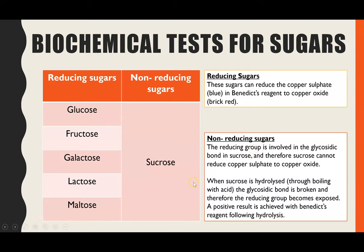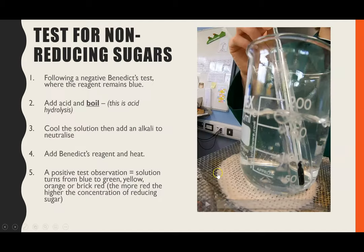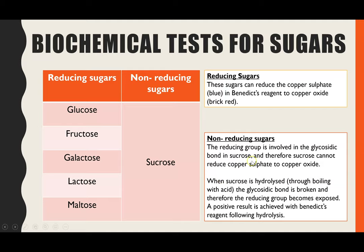The reason sucrose eventually does give a positive result is that we first hydrolyse it by boiling it in acid. This breaks the glycosidic bond between the monomers, glucose and fructose, giving us those two separate monomers. When we then do the Benedict's test again, we get the brick red colour. You'll often find it's a very dark brick red, because now you have two monomers — glucose and fructose — whereas when testing glucose alone you only had one sugar, so more sugar is present.